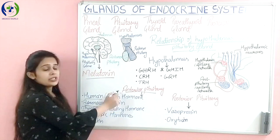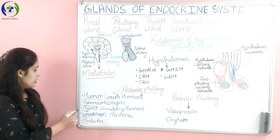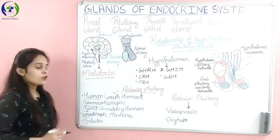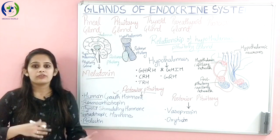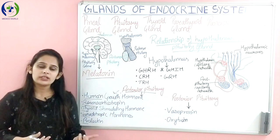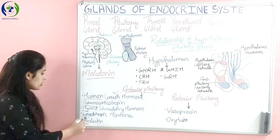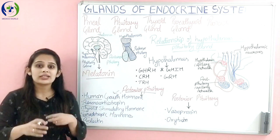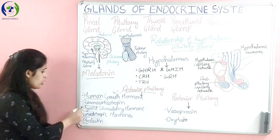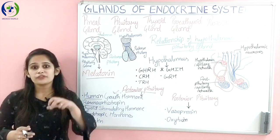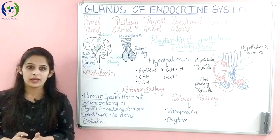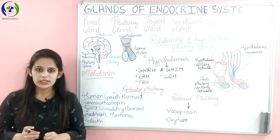Now why is the anterior pituitary gland called the master gland? The human growth hormone is responsible for the growth of the human being. The adrenocorticotropin hormone regulates the adrenal gland for the secretion of adrenal hormones. The thyroid stimulating hormone regulates the thyroid gland for secretion of thyroid hormones. The gonadotropic hormones regulate the gonads to secrete sex hormones. And prolactin helps in ejection of milk. So these hormones regulate other glands of the endocrine system — that is why the anterior pituitary is called the master gland.